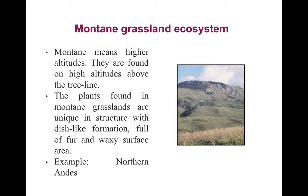Mountain grassland ecosystems are found at higher altitudes above the tree line. The plants found here have unique disc-like formations and are covered with fur and waxy surfaces. An example of a mountain grassland ecosystem is the Northern Andes.